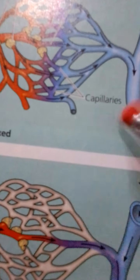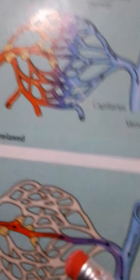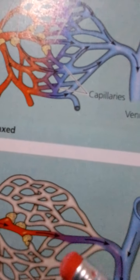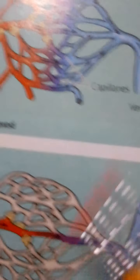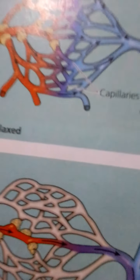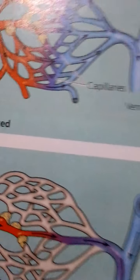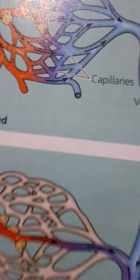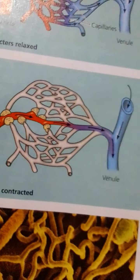About 85% of the fluid that leaves the blood at the arterial end of a capillary bed re-enters from the interstitial fluid at the venous end. The remaining 15% is eventually returned to the blood by the vessels of the lymphatic system.